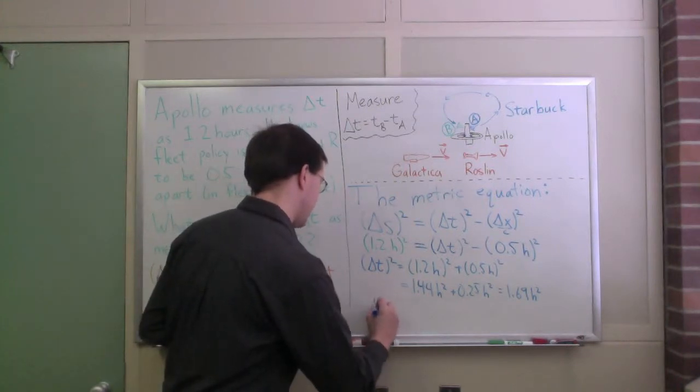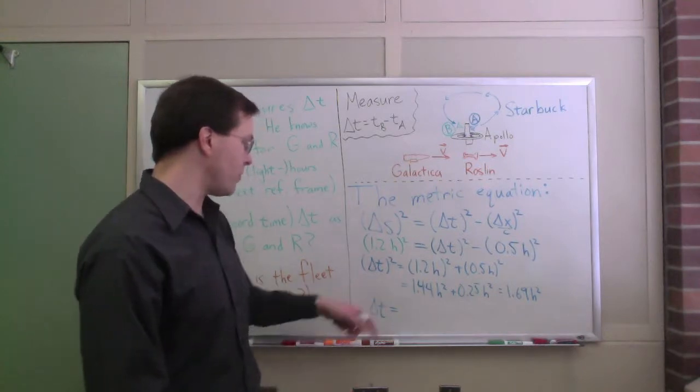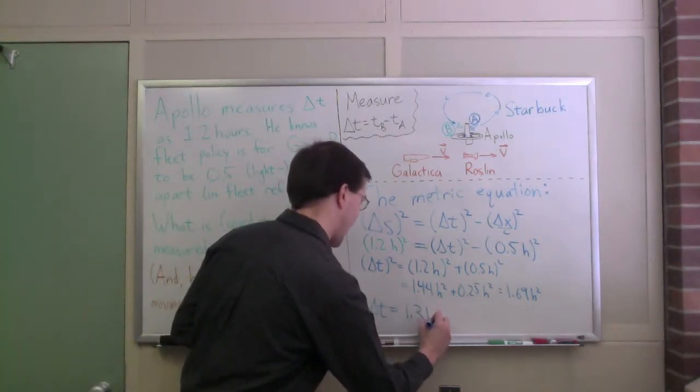That tells me that delta t squared equals 1.2 hours squared plus 0.5 hours squared. That is 1.44 square hours plus 0.25 square hours, which is 1.69 square hours. And I can solve that. That tells me that delta t is, I'm doing positive numbers here, delta t is the square root of that. It's in fact 1.3 hours.